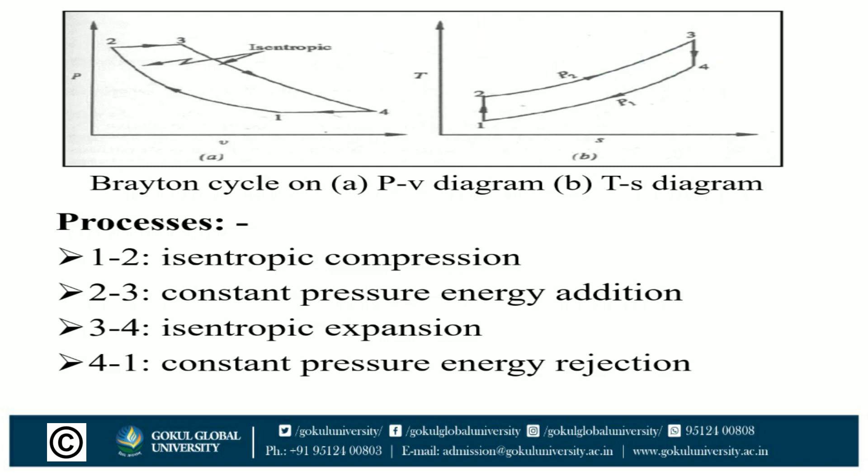The high pressure and temperature gases coming from the combustion chamber enter the turbine at point 3 and expand isentropically to point 4. This gives the PV and TS diagram of the Brayton cycle. The analysis of the Brayton cycle involves two processes: isentropic and constant pressure. Process 1-2 is isentropic compression; process 2-3 is constant pressure heat addition; process 3-4 is isentropic expansion; and process 4-1 is constant pressure heat rejection.